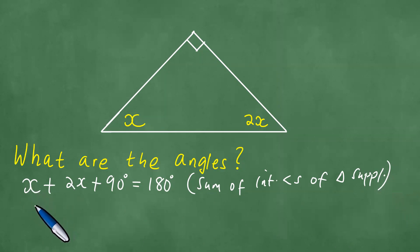We have x plus 2x which is 3x, which equals 180 minus 90, which is exactly 90 degrees.